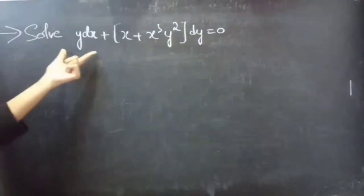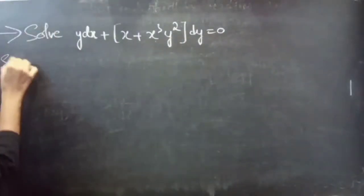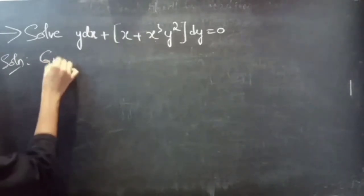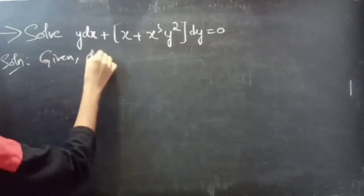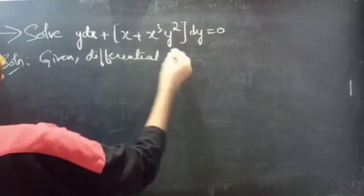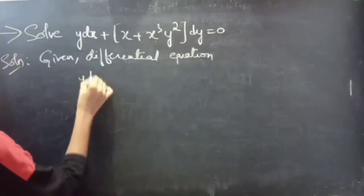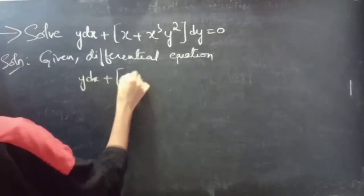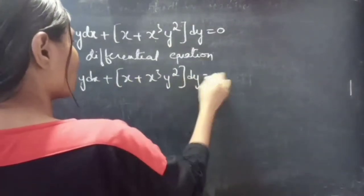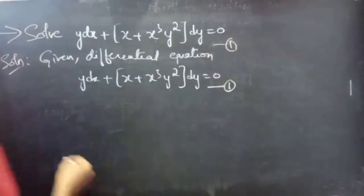Problem: solve y dx plus (x plus x cubed y squared) dy equals to 0. Given this differential equation, consider equation 1.